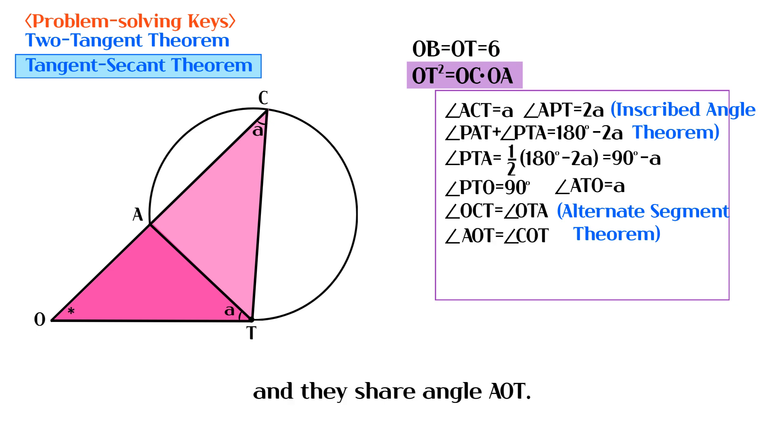And they share angle AOT. So triangle COT and triangle TOA are similar. And the ratio of OC to OT is equal to OT to OA.